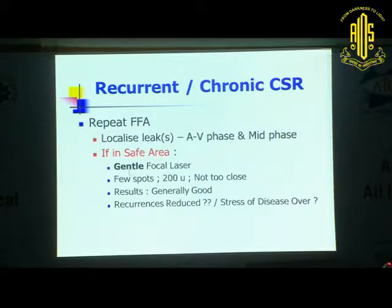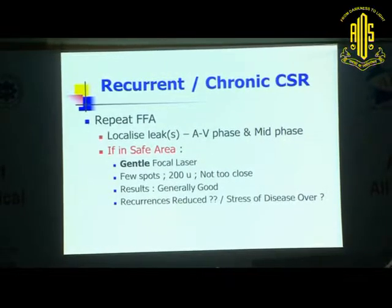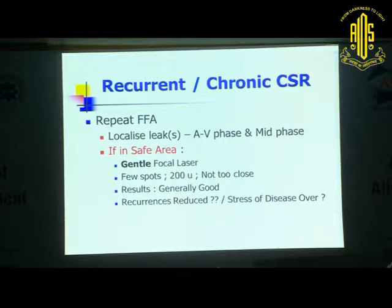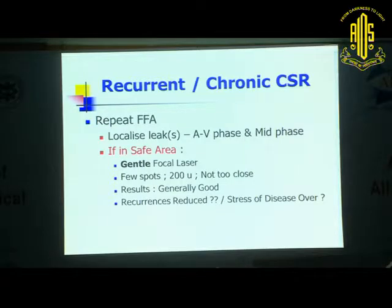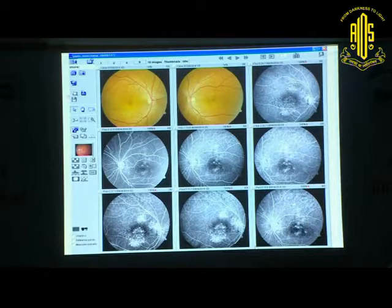We then repeat a fluorescein angiogram. If it is chronic CSR and the leakage is in the safe zone — meaning it is sparing the central foveal avascular zone — then gentle laser can be done. I emphasize gentle because you need not produce a chalky white burn; use as large a spot size as possible. We generally use 200 micron spot size and do what is known as photo-fermentation rather than photocoagulation. Results are pretty good in recurrent CSR if it is laserable, though recurrence reduction with laser is questionable.